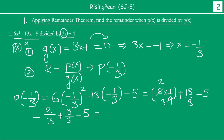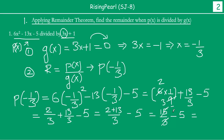Now 6 times 1 by 9 simplifies — 3 twos are 6 and 3 threes are 9 — so the first term becomes 2 by 3. So we have 2 by 3 plus 13 by 3 minus 5. Taking 3 as the common denominator: (2 plus 13) by 3 minus 5, which is 15 by 3 minus 5, which is 5 minus 5, which equals 0.